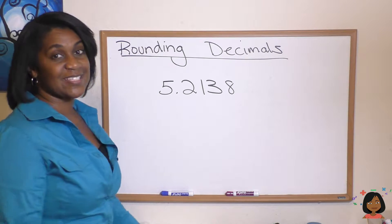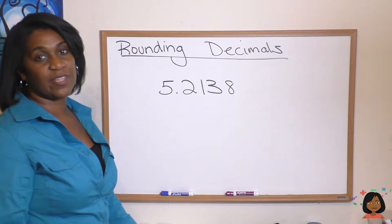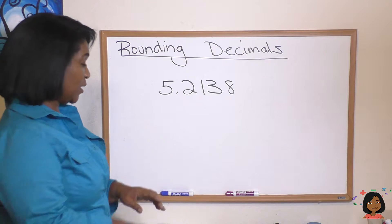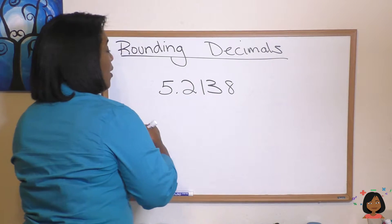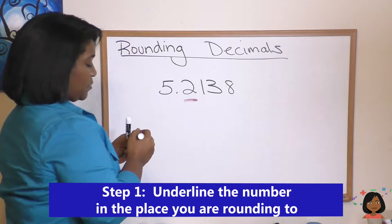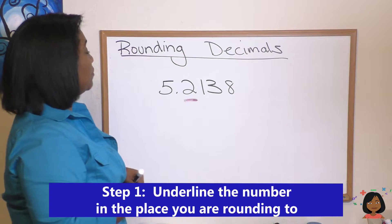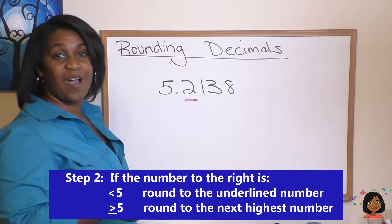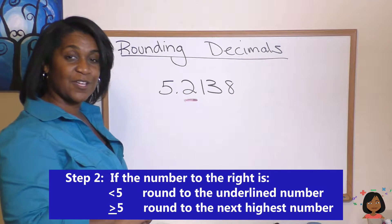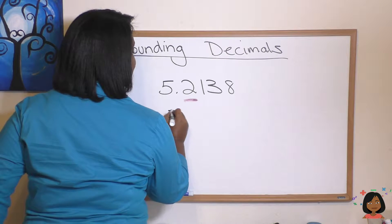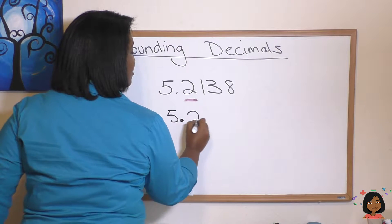I have a nice number here and if I said let's round this number to the tenths place, which I'm going to highlight for you, we know is the 2. First thing we do is we look to the right and we see that that number is 1, so it's less than 5, which means when we round to the tenths place, we're going to keep this as a 5.2.